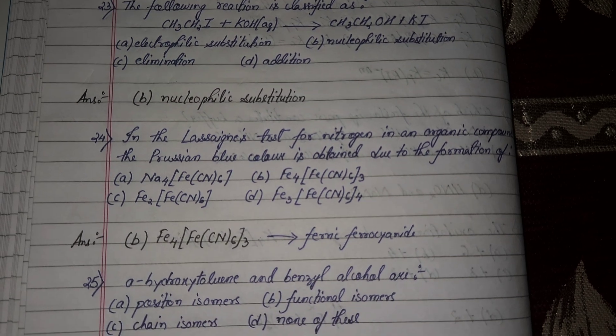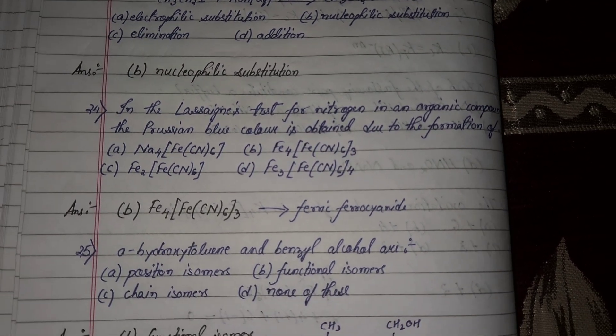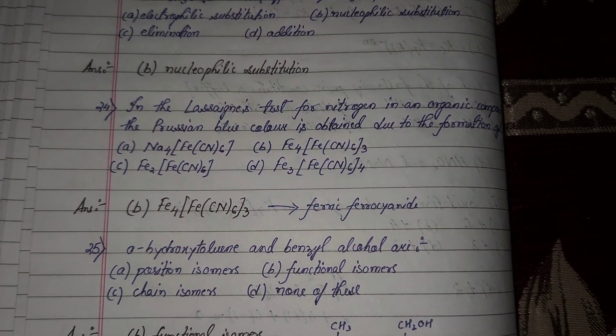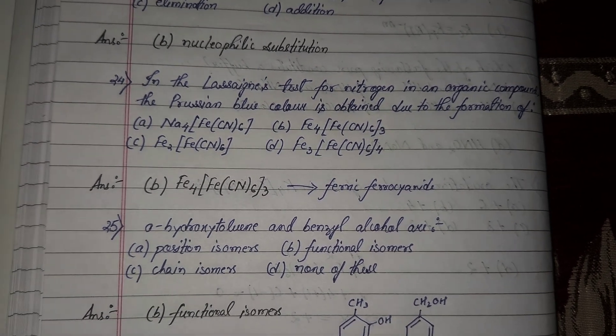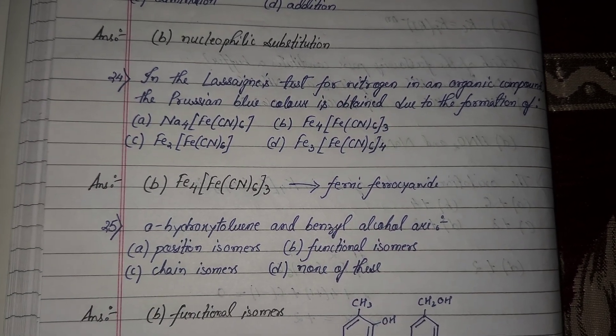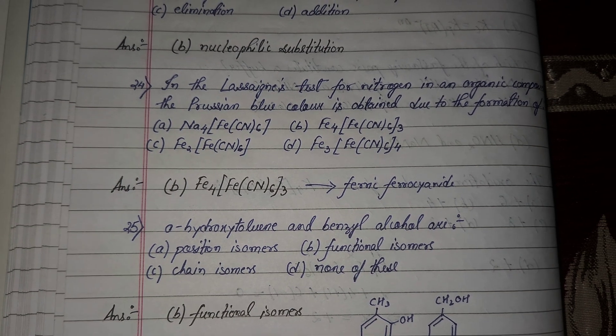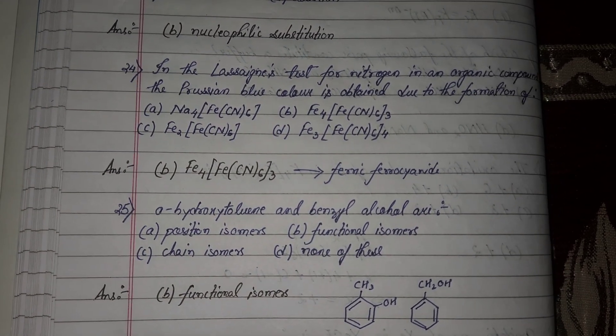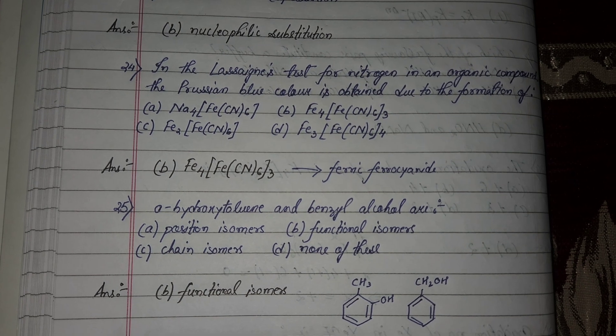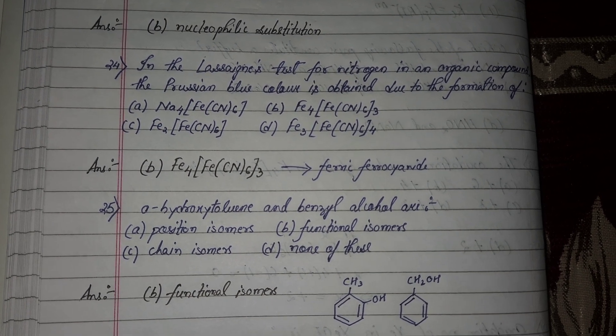Next question number 24, in the Lassaigne's test for nitrogen in an organic compound, the Prussian blue color is obtained due to the formation of ferric ferrocyanide. Option number B will be correct answer.